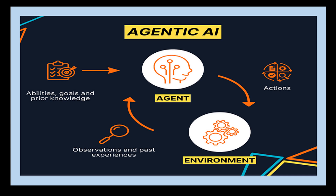They use techniques like reinforcement learning, planning algorithms, and natural language processing to understand and respond to complex situations. For example, we can take the example of an agentic AI like a self-driving car navigating through heavy traffic.